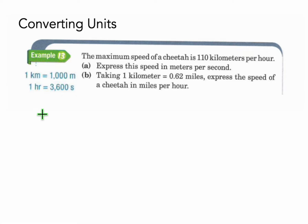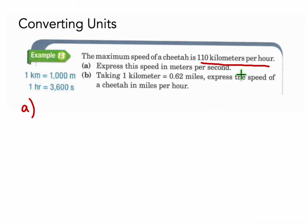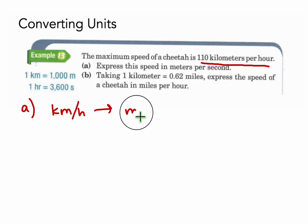We'll start with part A. The information given to us is: one kilometer equals 1000 meters, and one hour equals 3600 seconds — this will usually be given to you or you can look it up. In part A, we want to express the speed in kilometers per hour and convert it to meters per second.